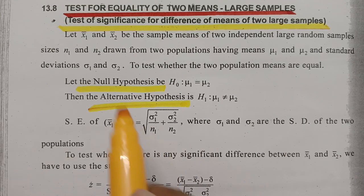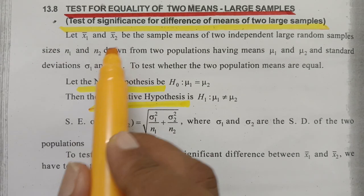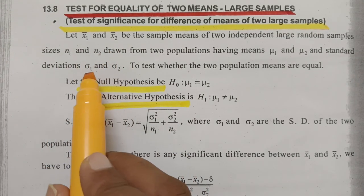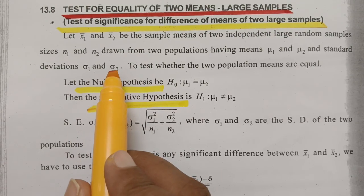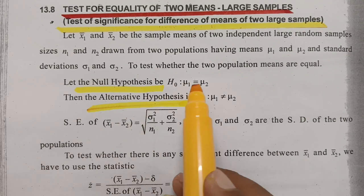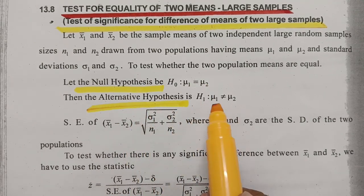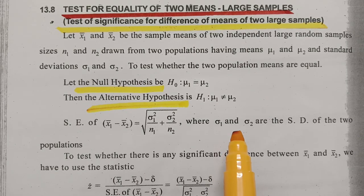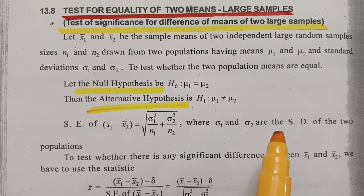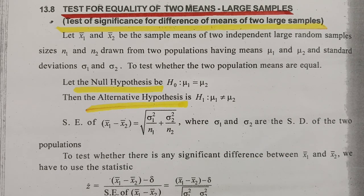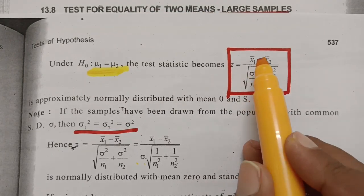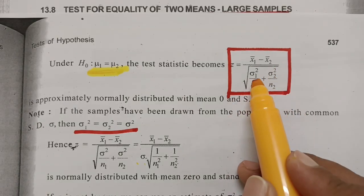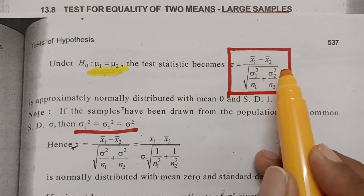For the working rule, there will be two means X1 bar and X2 bar, two sample sizes N1 and N2, and two standard deviations sigma1 and sigma2. The first step is the null hypothesis: mu1 equal to mu2. Alternate hypothesis: mu1 not equal to mu2. For the level of significance, there will be 1%, 5%, or 10% — we get it from the problem. If not mentioned, take 5% level of significance. The test statistic formula is: Z equals X1 bar minus X2 bar divided by the square root of (sigma1 squared by N1 plus sigma2 squared by N2).